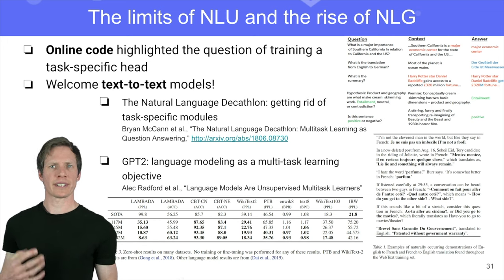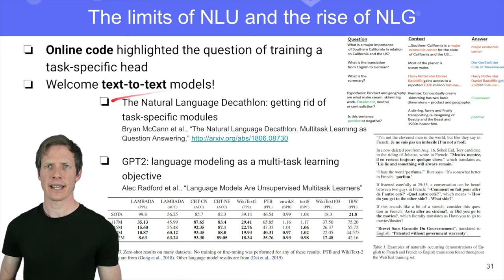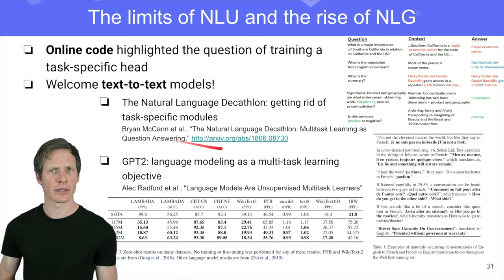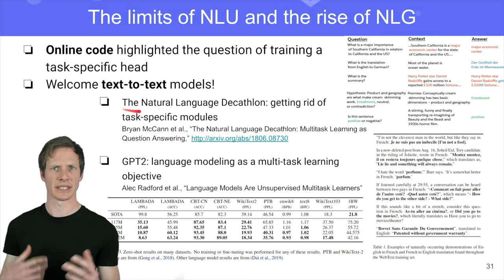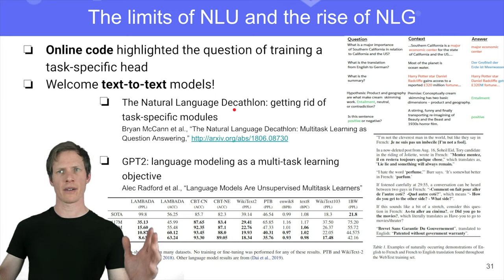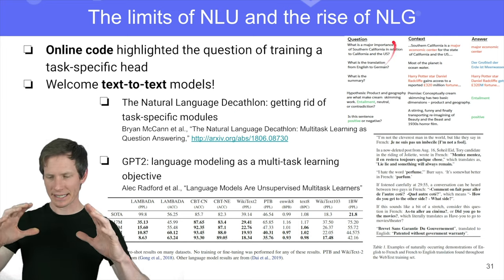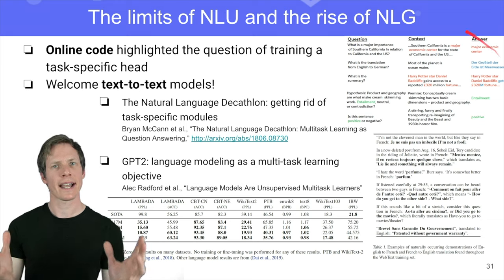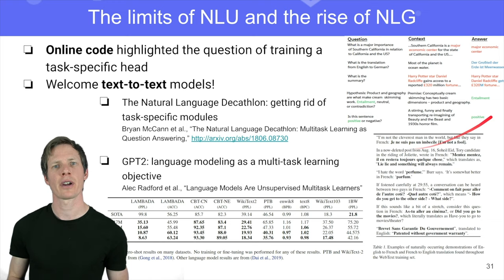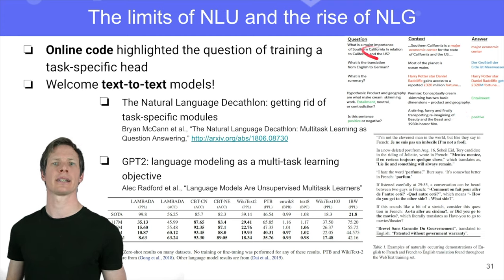Recently, we've seen more and more text-to-text models. This was started by a nice Salesforce paper by Brian McCann called the Natural Language Decathlon — a benchmark where you have 10 tasks, and they were all cast in the same framework, all cast as question-answering tasks.